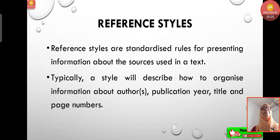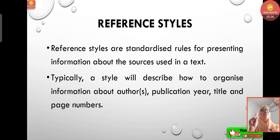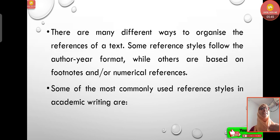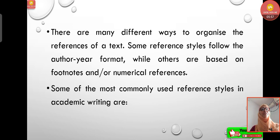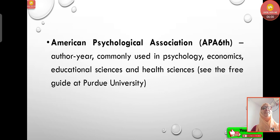What are the different reference styles? Reference styles are standardized rules for presenting information about sources used in a text. A style describes how to organize information about authors, publication year, title, and page numbers. There are many ways to organize references — some styles follow the author-year format, others are based on footnotes or numerical references. One of the most commonly used styles in academic writing is APA — American Psychological Association — sixth edition.